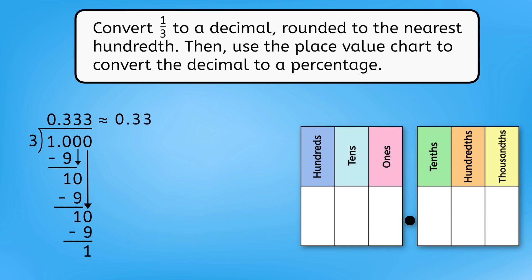With 33 hundredths in the place value chart, we can quickly spot the hundredths place to identify 33 out of a hundred. So, one-third is equivalent to approximately 33%. As long as we convert the fraction to a decimal, we can just use our knowledge of place value to convert the decimal to a percent.